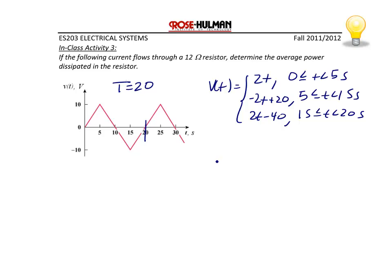So there are several ways we could do this problem to find the RMS value. Recall that we have to integrate over v of t squared times 1 over the period. So if I use the period from 0 to 20, I would have to integrate 3 different squared line functions. However, if I integrate from 5 to 25, I only have to integrate 2 lines, which simplifies life a little bit, so that's what we're going to do.